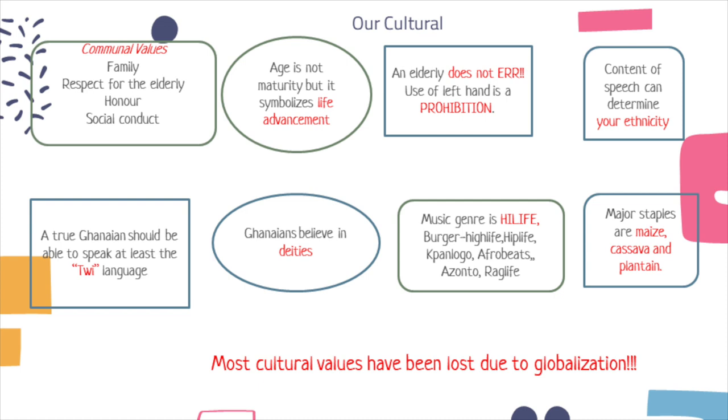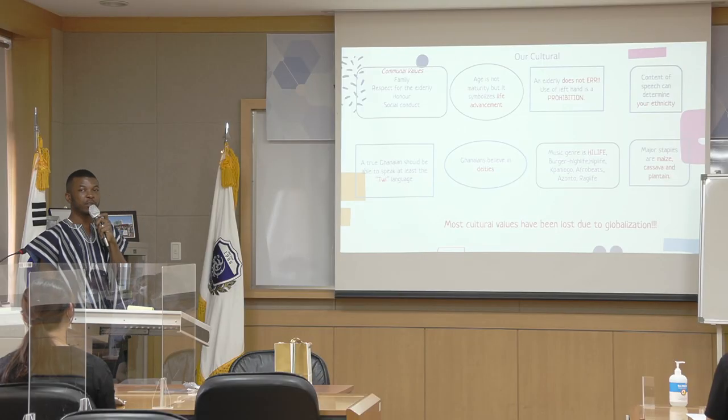The context of speech can determine one's ethnic background. For example, I'm from the eastern part of Ghana, and in my language, in every situation I have to use 'please' — to the extent that even if I'm insulting you, I have to use please. So the context of speech can determine where you're coming from.